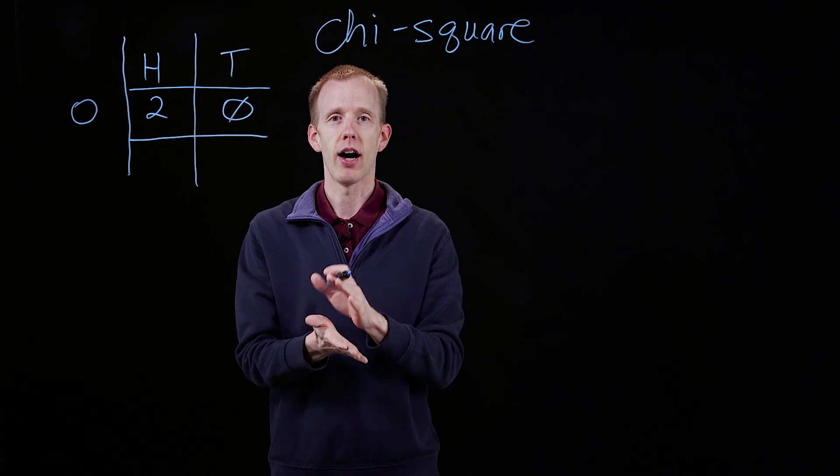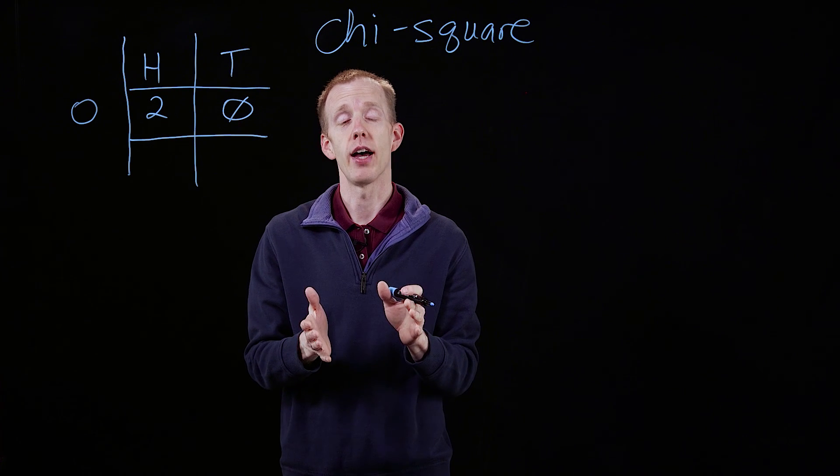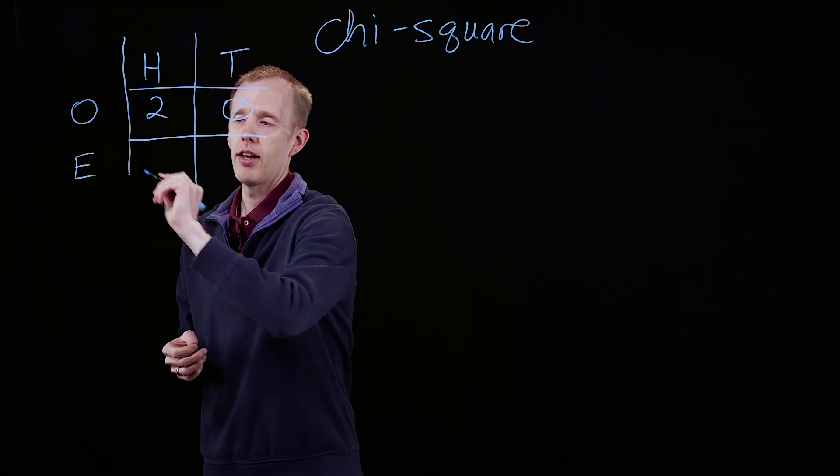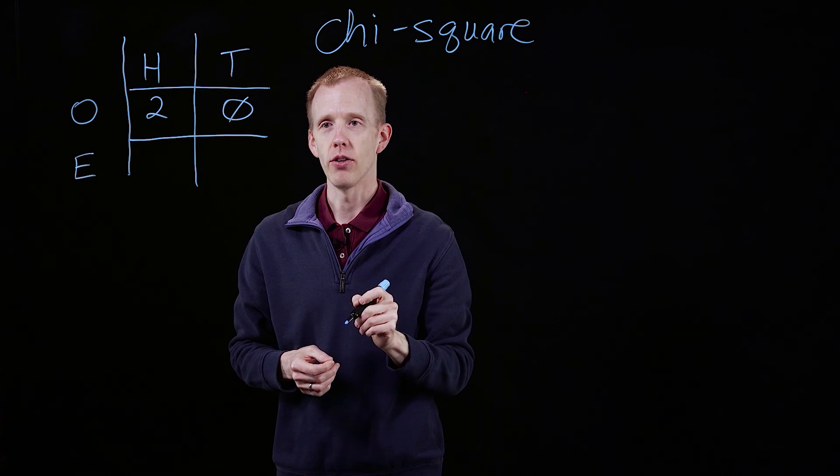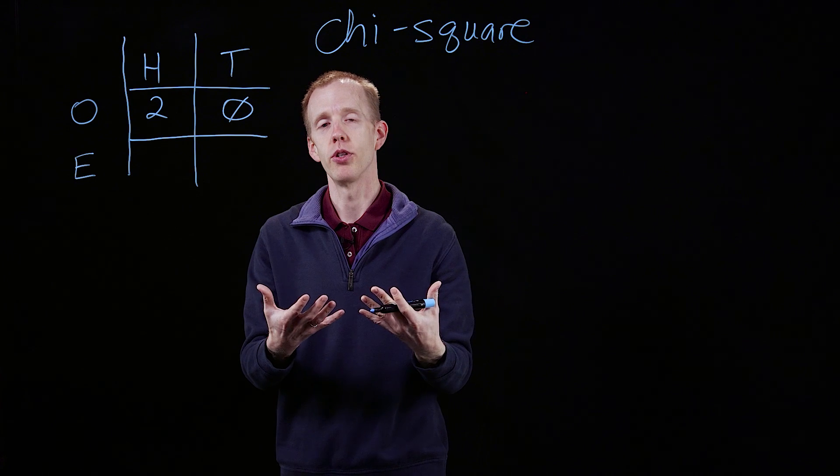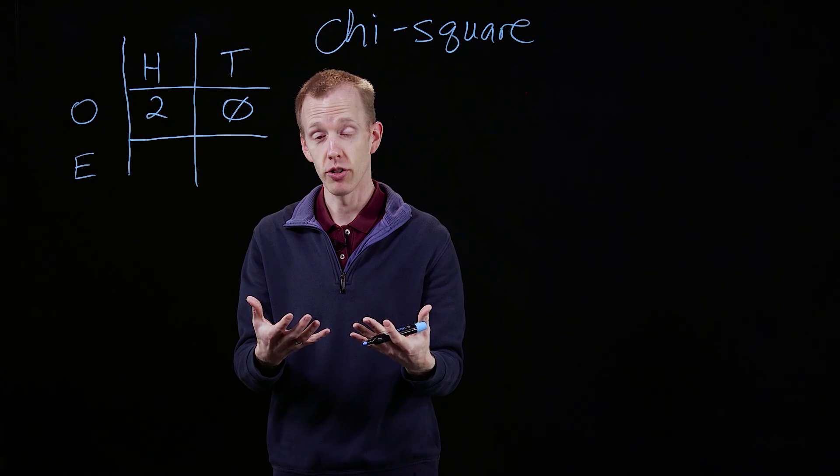The critical part of the chi-square test, and most statistical tests, is we need to have an expected value. We need to know what was expected, what we observed, and then we compare those two statistically to ask if there's a difference or not.